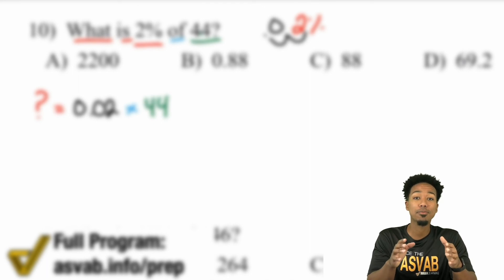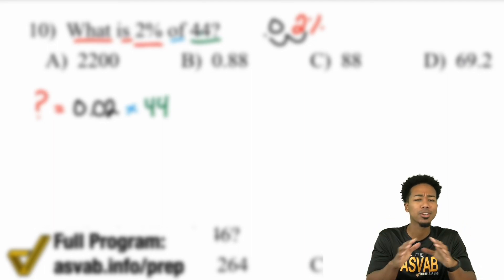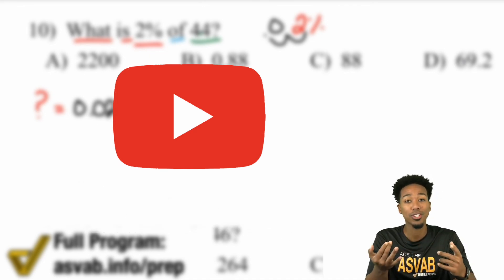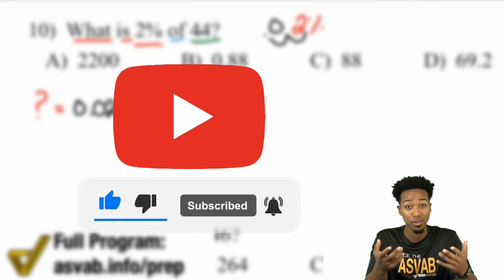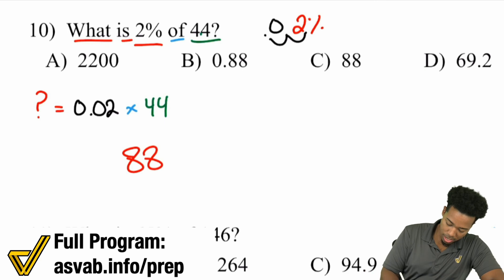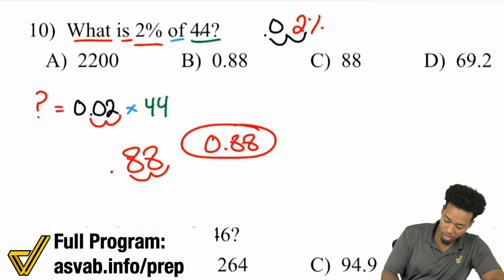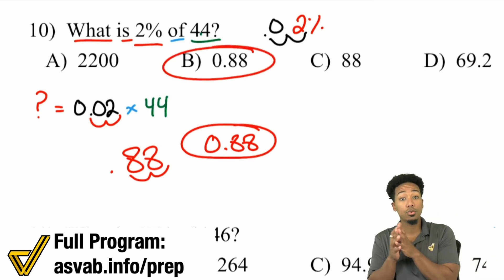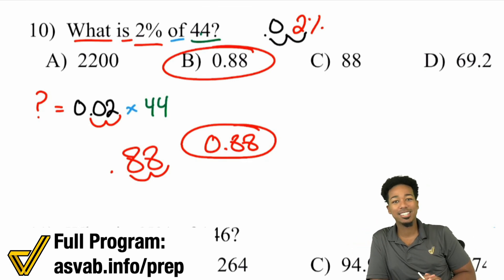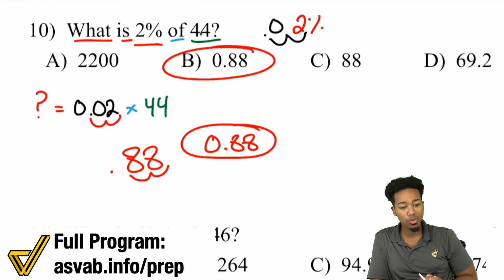Quick reminder: if you're enjoying this video, please like it, comment, and subscribe so you don't miss new videos. Now back to 2% of 44 — we got 88, and we have two decimal places to bring back: one, two. So the answer is 0.88. If you want to mix in mental math you absolutely can — it'll make these problems much faster.